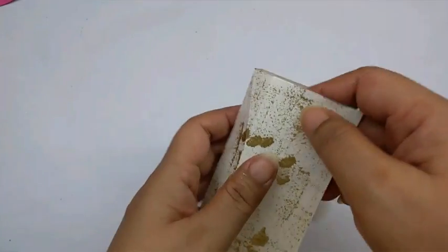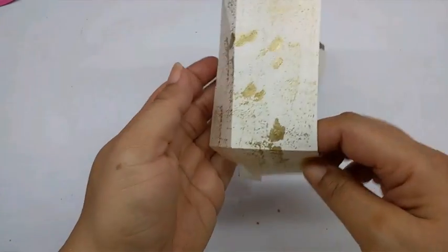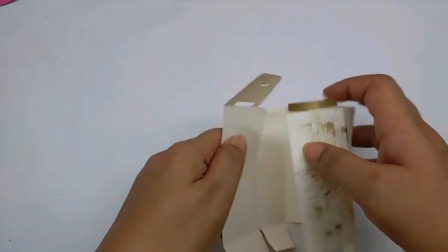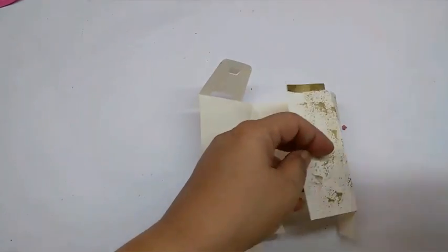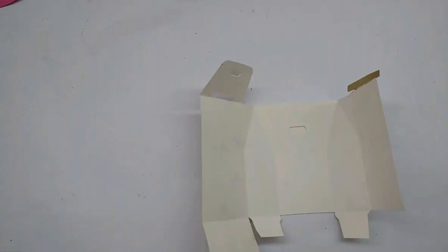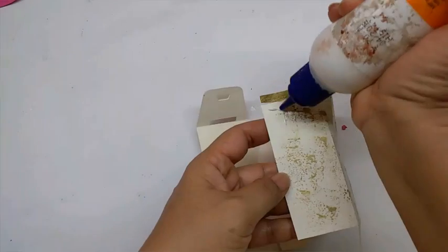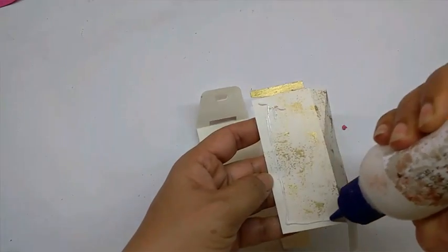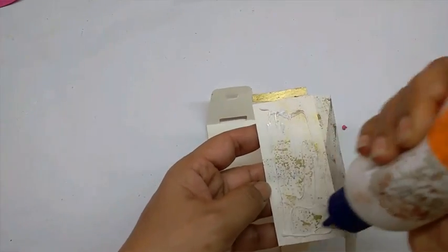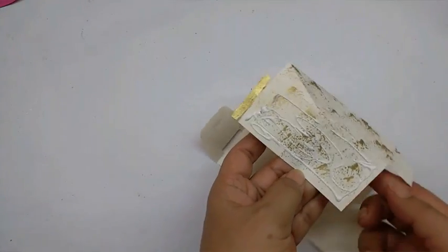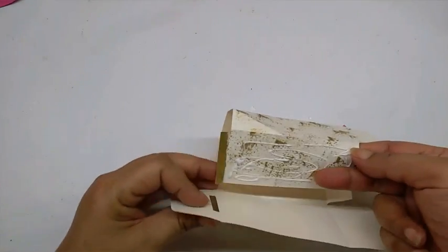Now just fold it. I have made the square, the score lines also. So just fold it according to that. And before that just apply the glue and stick it. Now this part will all go inside. I am going to stick it on this.